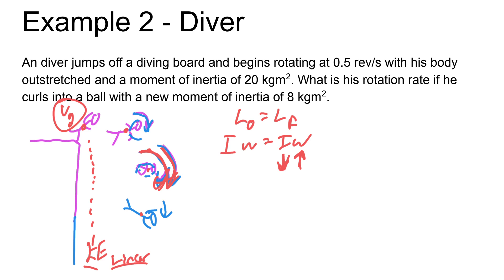Let's go ahead and do the math on this. The math is pretty straightforward. We have 20 kilogram meters squared and omega is 0.5 to start with. This time it's going to decrease to 8 kilogram meters squared, and we're looking for the new rotation rate. Just like before, whatever units you want to end with, stick with those units. We get an omega of 1.25 revolutions per second.